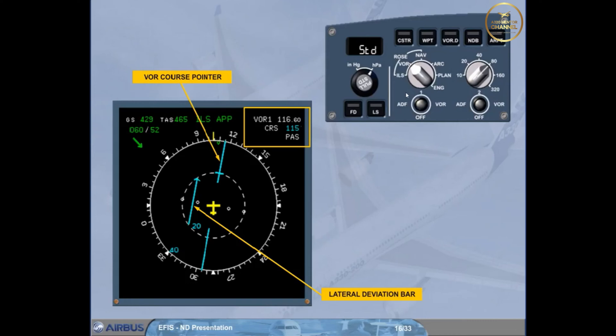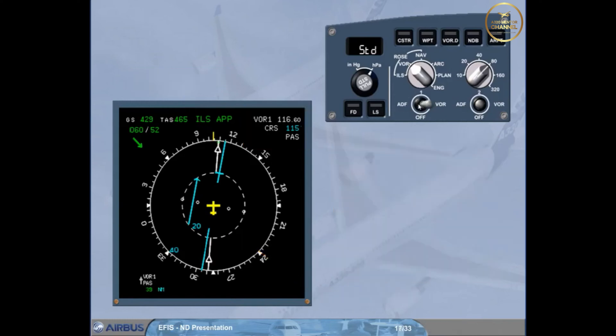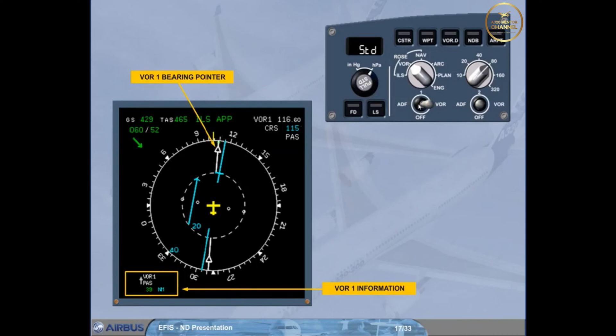Let's now display the VOR bearing pointer. Select VOR1. Notice that there is a white VOR bearing pointer and VOR information associated with the pointer. This information is available even if a course hasn't been selected on the MCDU radio navigation page. The number 1 pointer is represented by a single line. Let's change the selection on the EFIS control panel to display ADF1 instead of VOR1.